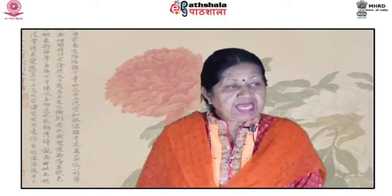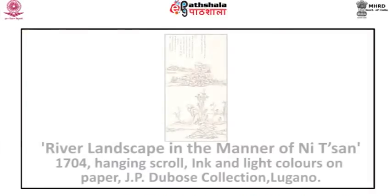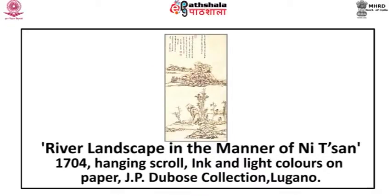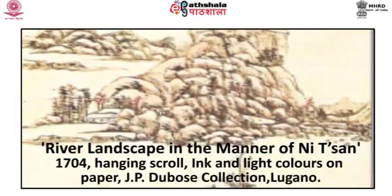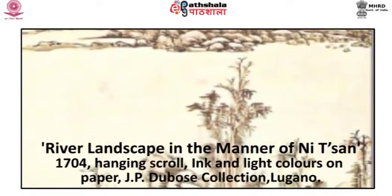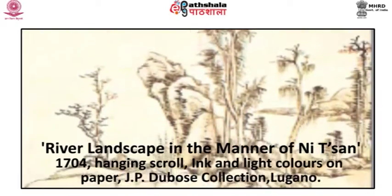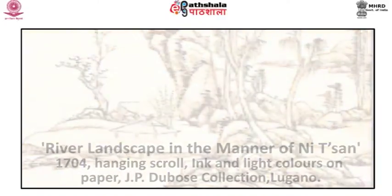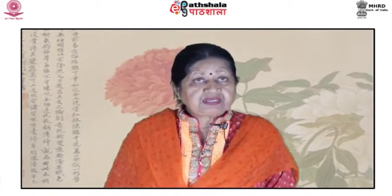In their careful construction and concern with abstract form, his landscapes have been likened to those of Paul Cézanne. His River Landscape in the Manner of Ni Tsan, dated to 1704, is a hanging scroll in ink and light colors on paper, at present in the J.P. Dubois collection, Lugano. He writes that he painted it after his memory of a picture by his grandfather Wang Ximin, which had been done in imitation of Tung Chi Chang — and behind all this, of course, was Ni Tsan, the ultimate source.